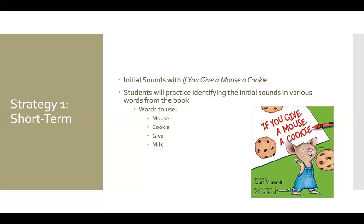The first activity focuses on initial sounds and serves as a short-term practice activity. A read-aloud will be conducted for the story If You Give a Mouse a Cookie, and students will work with different words from that story. The teacher says a word and asks students to identify the sound they hear at the beginning. After identifying the sound, the teacher asks the student what letter goes along with that sound to work on alphabetic recognition. The class will work through about 10 to 15 words from the story, with the teacher pointing out that they are working on initial or beginning sounds.